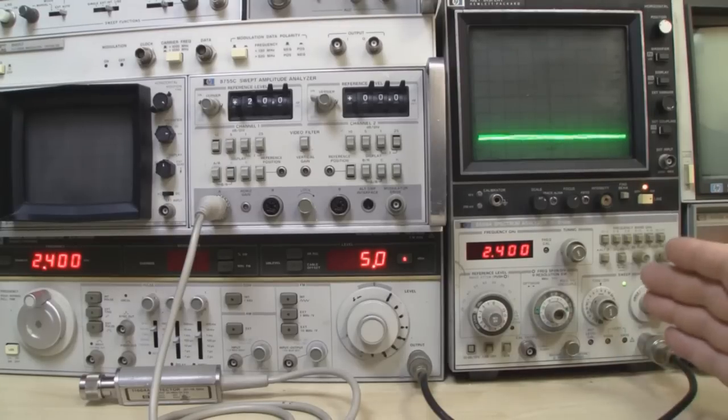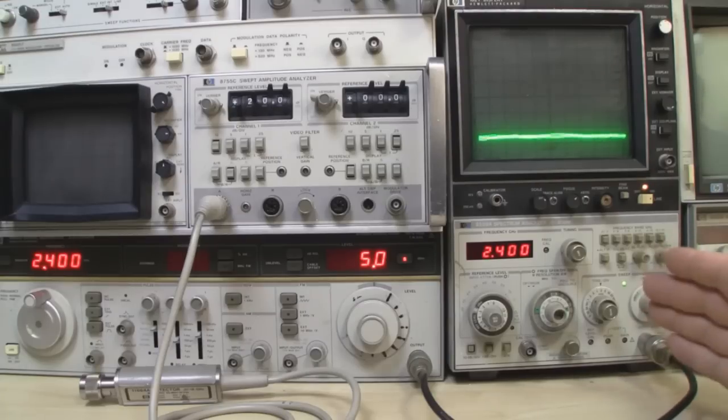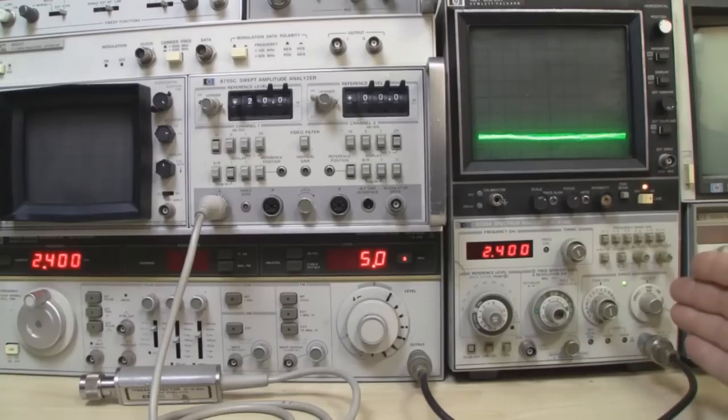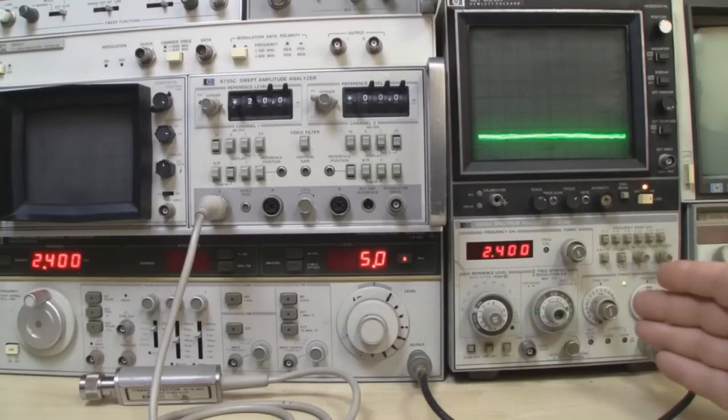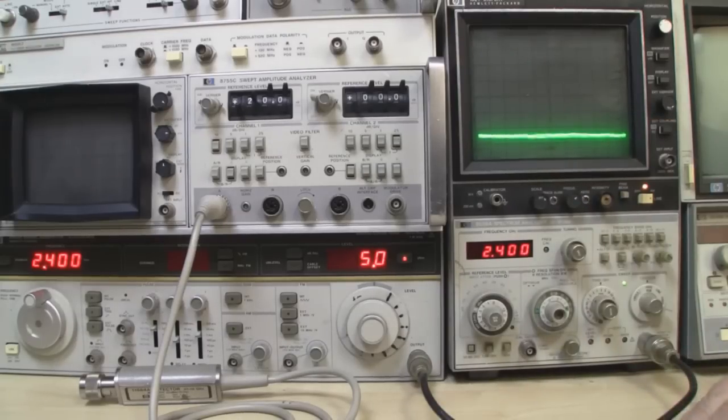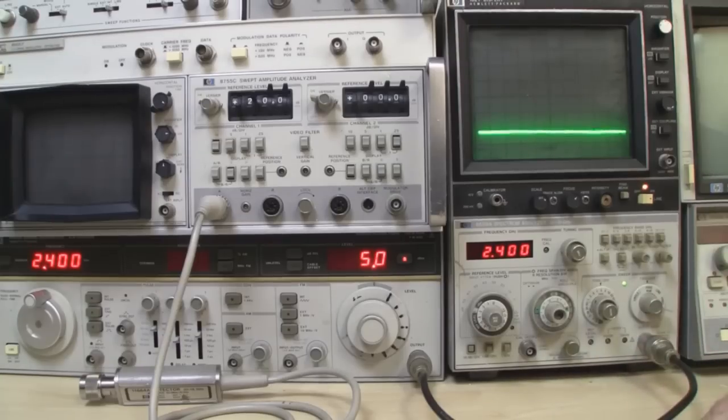Now sometimes when people advertise spares or repairs off eBay it's often because they've got a piece of equipment that they don't normally sell or they don't know anything about. And he said in the description that he turned it on and that was about it really. All he got was this wavy line on the display there. And he did have a picture of it actually switched on. But I've got it here in the lab now.